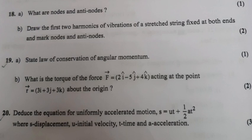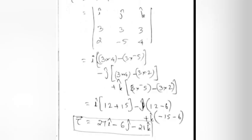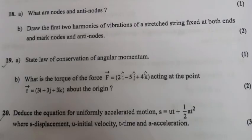Answer 19b: r = 3i + 3j + 3k, F = 2i − 5j + 4k. Torque τ = r × F. Calculating: i(3×4 − 3×(−5)) − j(3×4 − 3×2) + k(3×(−5) − 3×2) = i(12 + 15) − j(12 − 6) + k(−15 − 6). Therefore τ = 27i − 6j − 21k.